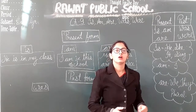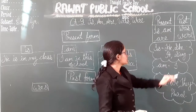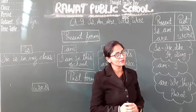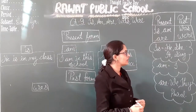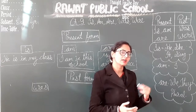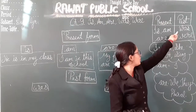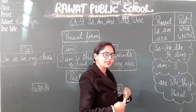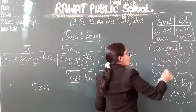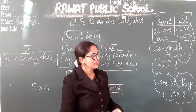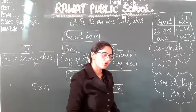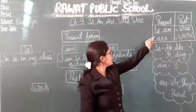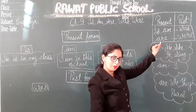But when we are talking about earlier, or we can say yesterday, we use was and were. So for any reason we are talking about earlier, we use was. The same applies: for the present we use is or are, and for the past we will use was or were.